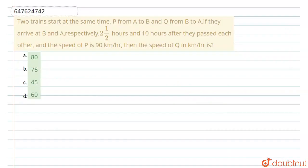Hello everyone, I am your teacher for this question. Let me explain this question to you now. The question says that two trains start at the same time, P from A to B and Q from B to A. If they arrive at B and A respectively, 2.5 hours and 10 hours after they passed each other, then the speed of P is 90 km per hour. We have to find speed of Q in km per hour.